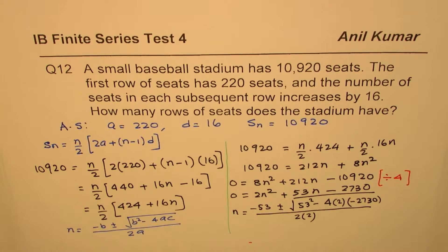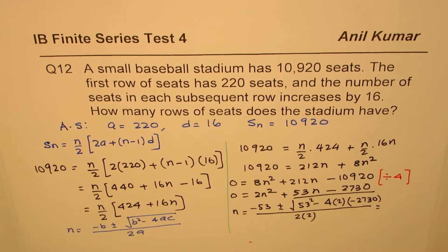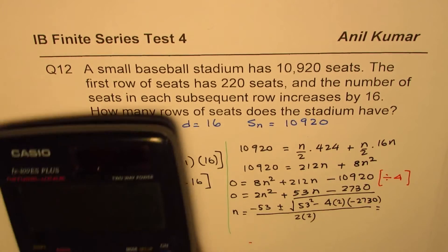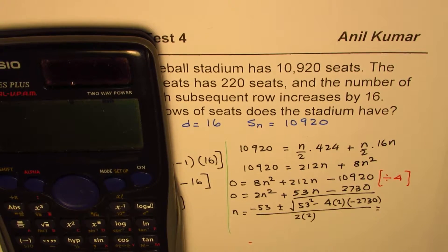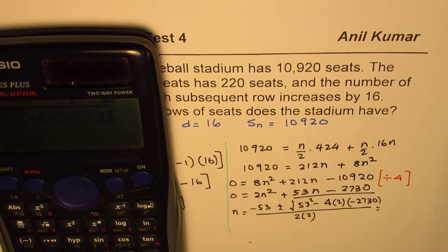So that gives us all the values. Now we need to use the calculator to figure it out. Let's figure out this term in the square root. So we have square root of 53² and minus is plus. So I'm writing plus here. 4 times 2 times 2730 equals to.